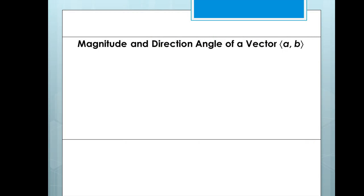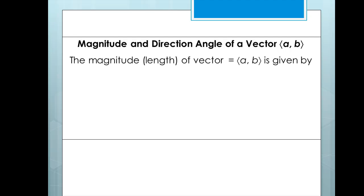We'll use the TI-89 to find the magnitude and direction angle of a vector. The magnitude or length of a vector (A, B) is given by this function. We'll put in rectangular coordinates x comma y, and the calculator will return the magnitude or the length.